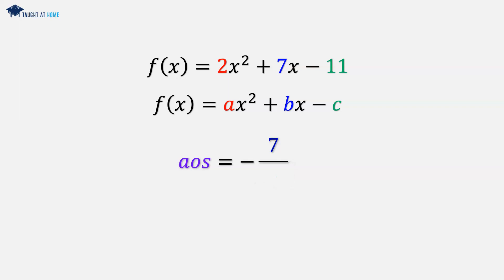So 2 times 2 in the denominator will be 4. So the axis of symmetry will be where x equals minus 7 over 4, which is minus one and three quarters, which is minus 1.75.